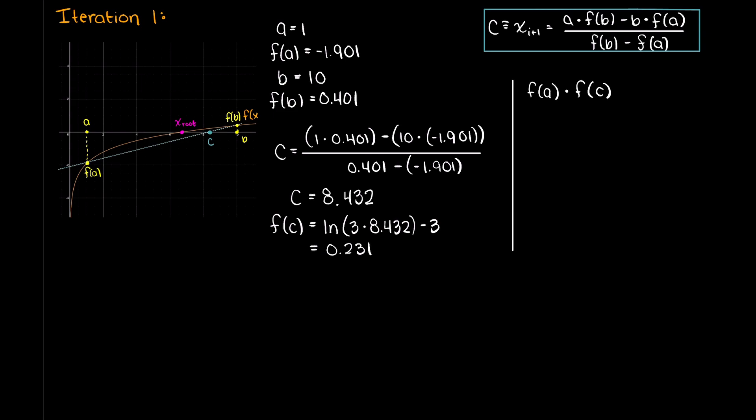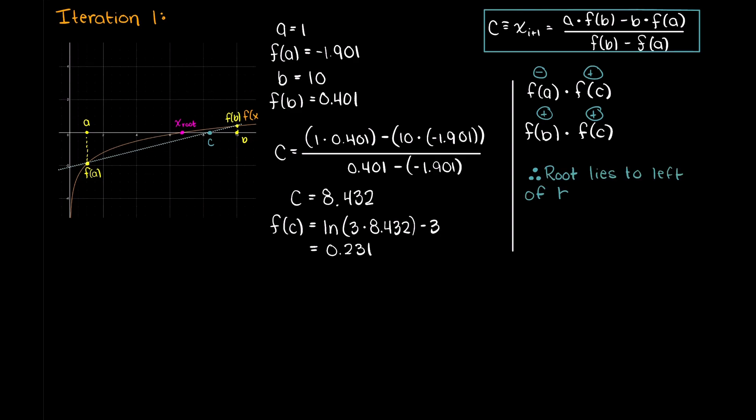Now, graphically here, it is clear that we are going to make this c value our new b value, as this test on the right indicates that we must cross the x-axis at least once between the inputs of 1 and 8.43.